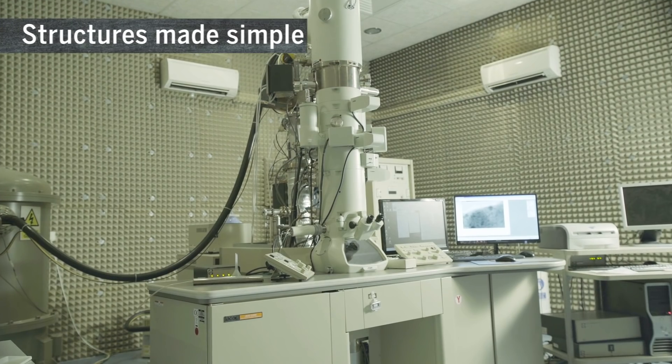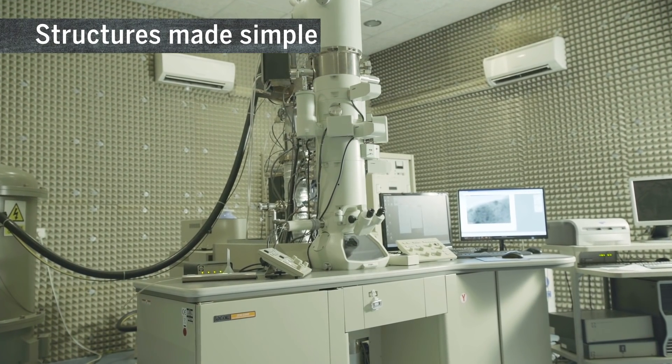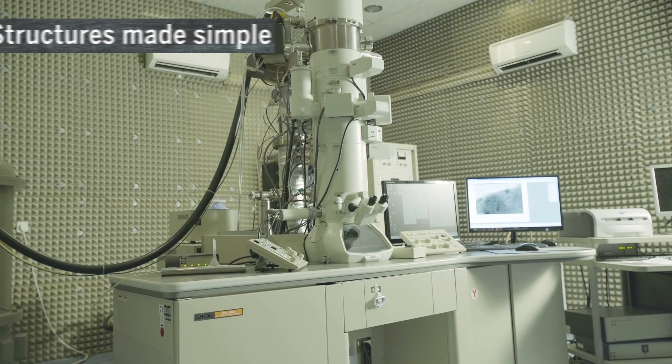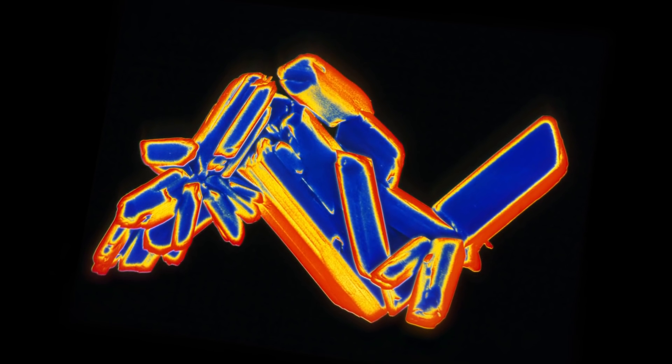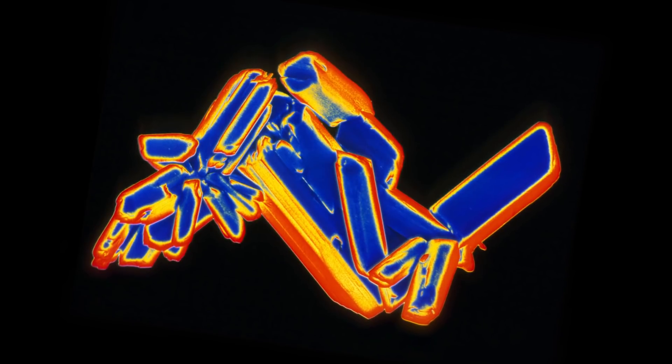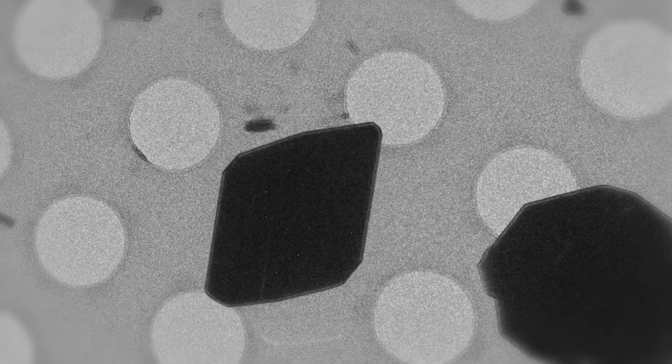Researchers have developed a technique based on electron microscopy that allows them to determine the precise shape of small organic molecules. The new approach is simple, fast, and works on tiny samples. It is likely to help speed up drug discovery.